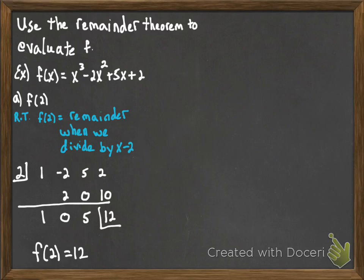So f(2) is 12. Let's continue to our next example. Let's say we want to evaluate that same function at -3.